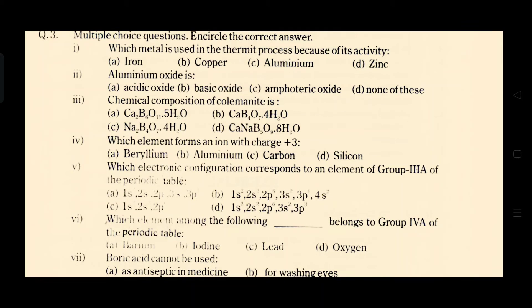Now the next one is which element forms an ion with charge plus 3? We know that aluminium forms an ion which having the charge plus 3. Option B is the correct option.